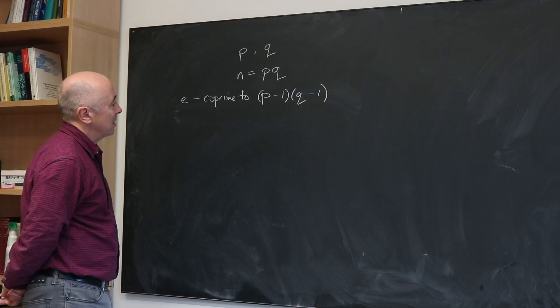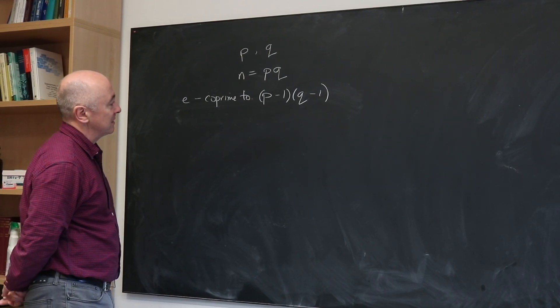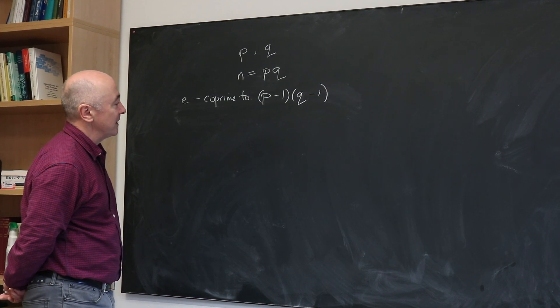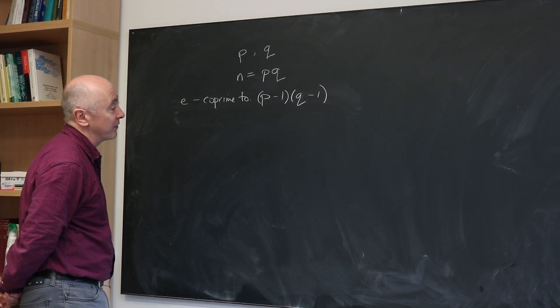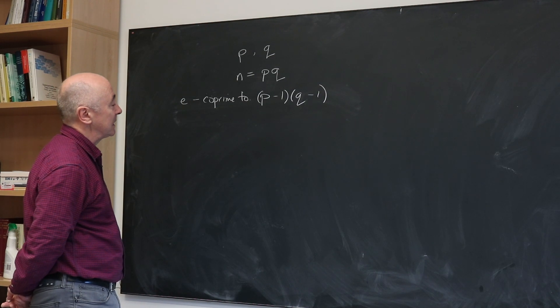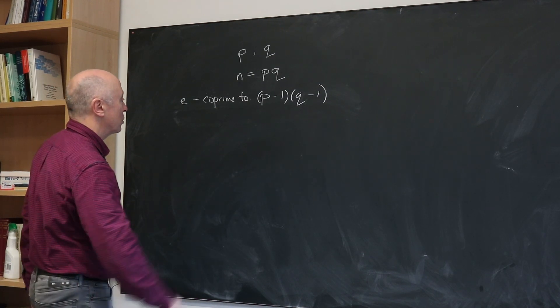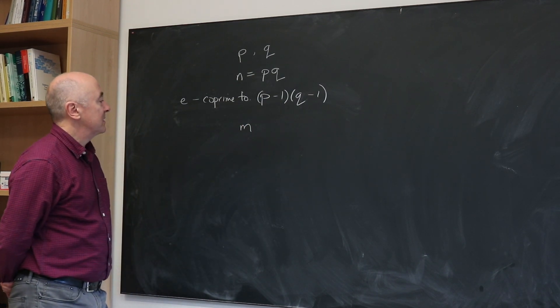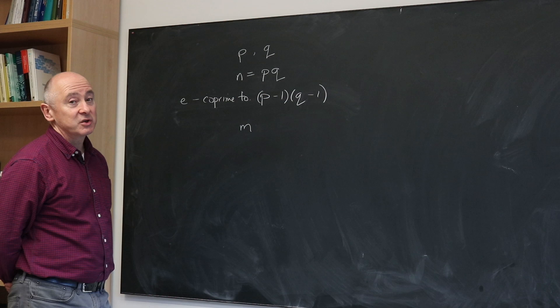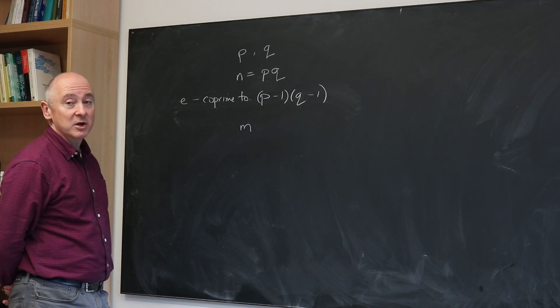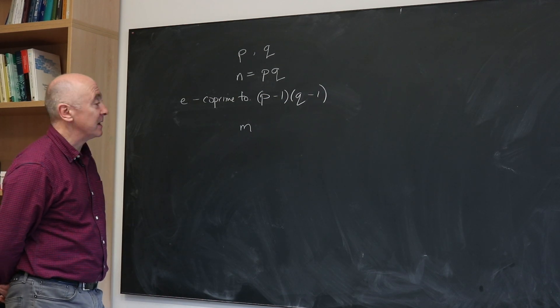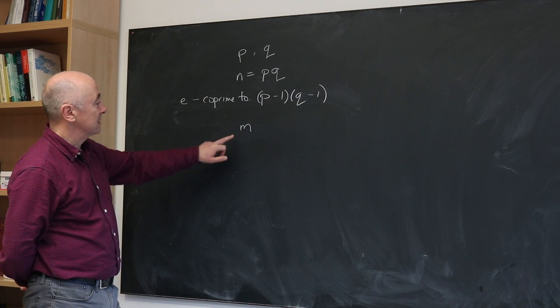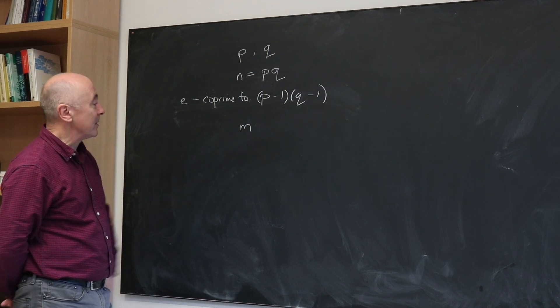Let's say we want to encode something, we want to send a number in some coded way that's very hard for other people to decode, and we'll call that number M. This will be a number that we want to transmit to somebody else and we don't want a third party to be able to find M given the way we encode it.